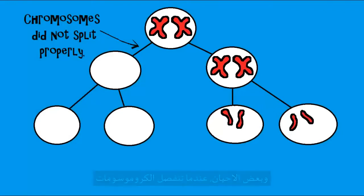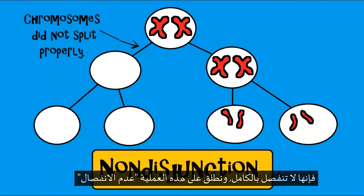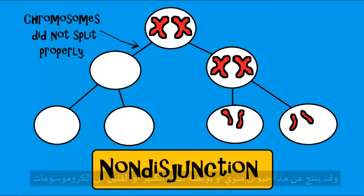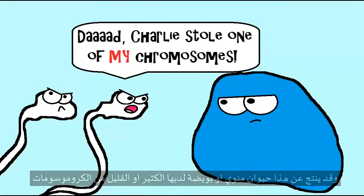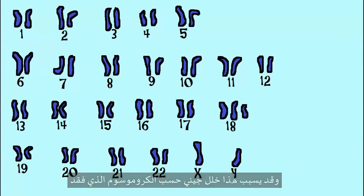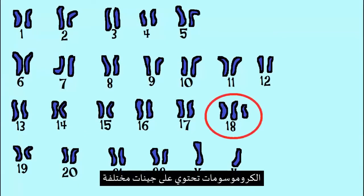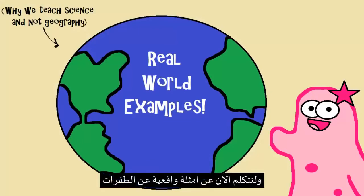Sometimes during meiosis, chromosomes don't separate completely — we call this non-disjunction. This results in an egg or sperm that has too many or too few chromosomes, and that can cause a genetic disorder. The specific chromosome affected really does make a difference in the result, since different chromosomes contain different genes.